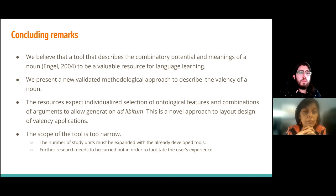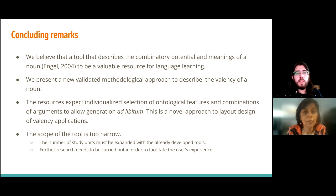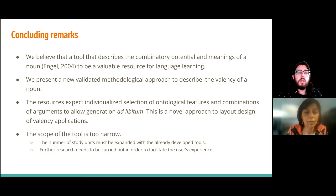To conclude, we believe that tools describing the combinatory potential of a noun are a valuable resource for language learners. We have presented a validated methodological approach that describes the valency of a noun, integrated into the resources via an ontology-based interface. The scope of the tool is still too narrow, and the number of study units needs to be larger for the finalized product to be relevant. Feedback from our first workshop implies that further research needs to be carried out to improve the user experience.